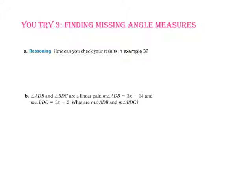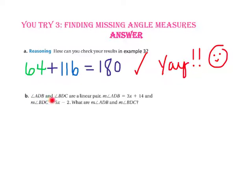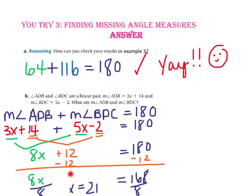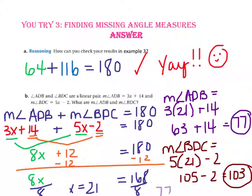Pause the video and do You Try number 3. Remember, you can check your results by combining the measures of the two angles — if they equal 180, you are correct. Part B: angle ADB and angle BDC are a linear pair. If the measure of angle ADB is 3x + 14 and the measure of angle BDC is 5x − 2, substitute and isolate the variable to find x = 21. Substituting back gives measures of 77 and 103, and since 77 + 103 = 180, we know we are correct.